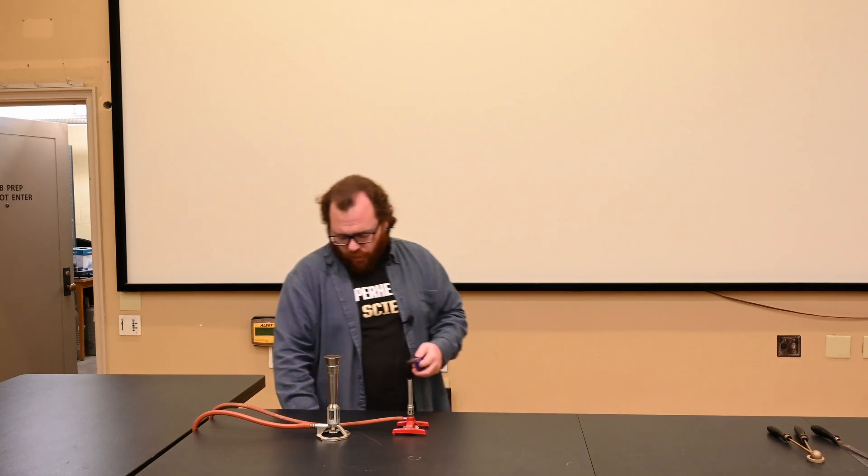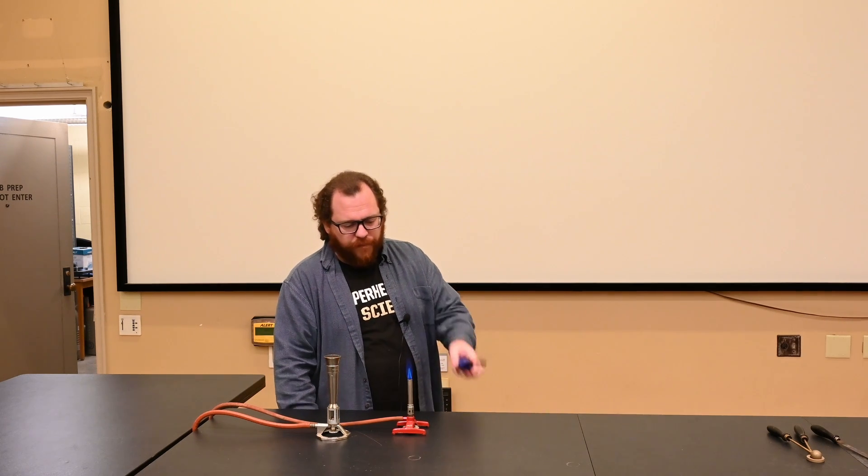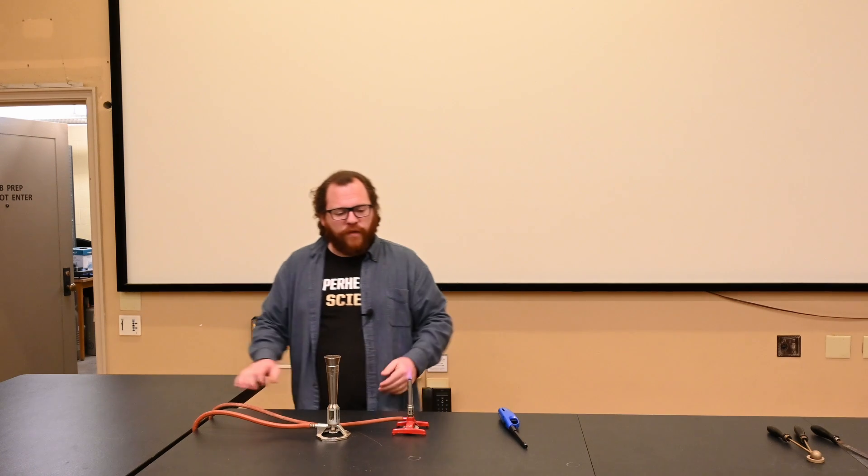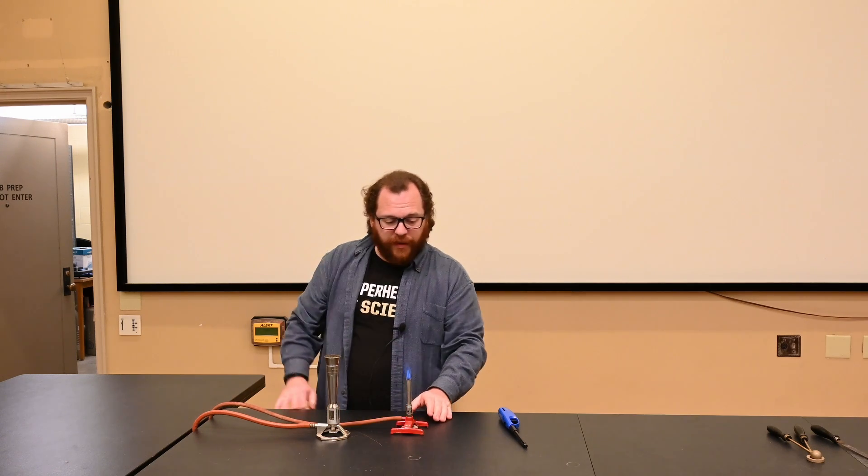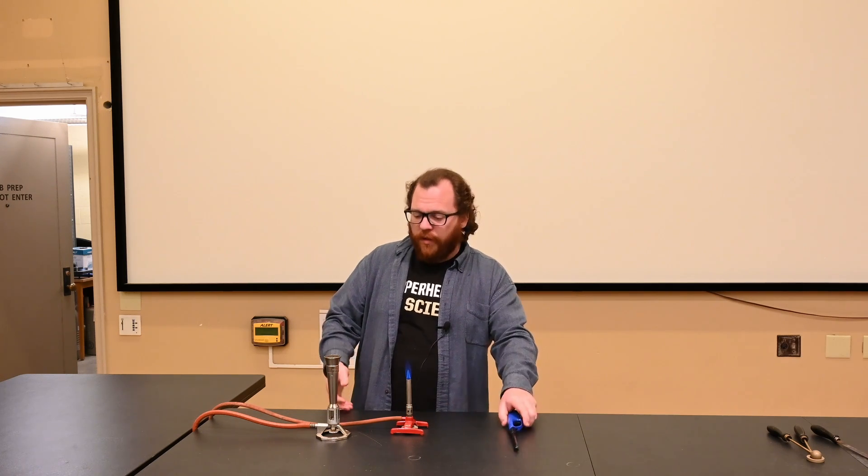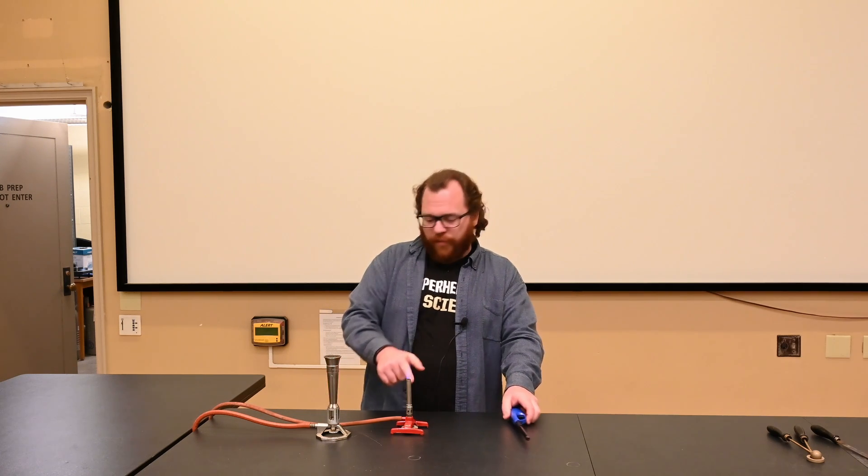This smaller one right here is a Bunsen burner. So when I light it, I get one flame. It's very nice and you can control the size by adjusting the knob at the bottom. And if it's completely off, sometimes you think the burner is not working because no gas comes out when it's totally closed, but this is a Bunsen burner.